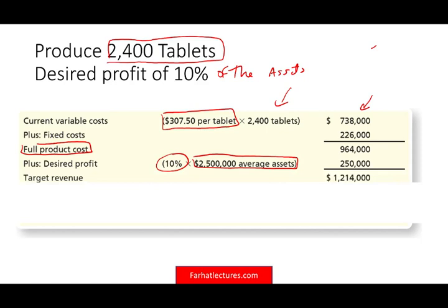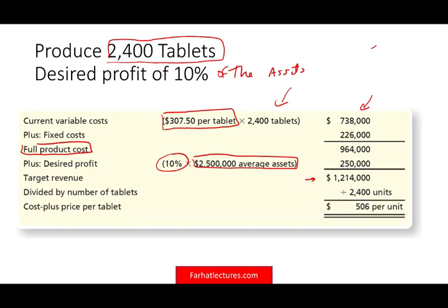Their target revenue is $1,214,000. They produce 2,400 tablets, so they will price the tablet at $506 per unit. This $506 per unit recovers their full cost plus gives them a return of 10% of their average assets. Will investors be happy? If they're looking at a 10% return, that's not a bad idea at all.